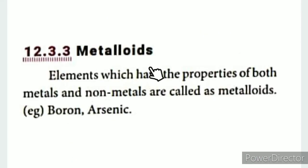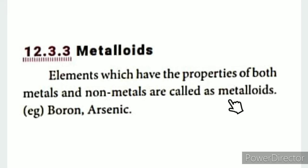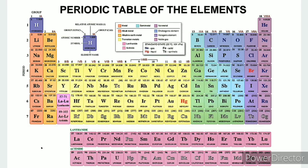Now let's talk about Metalloids. Metalloids are elements that have properties of both metals and non-metals. They possess some metallic characters and some non-metallic characters. Examples include Boron and Arsenic.